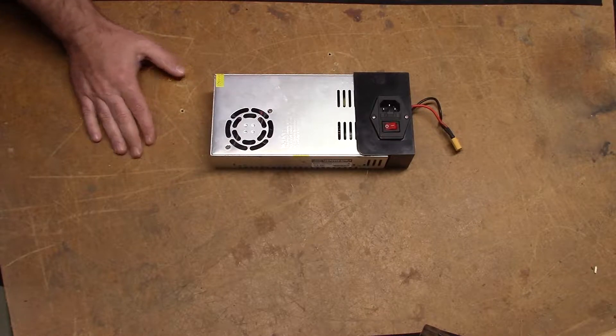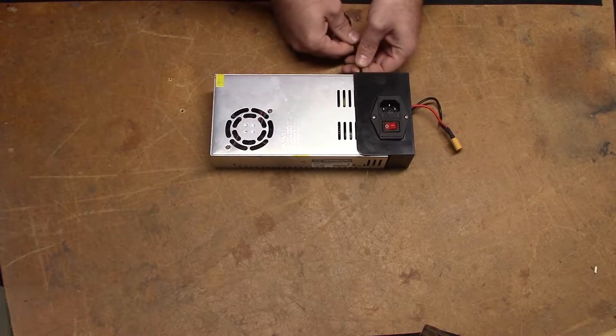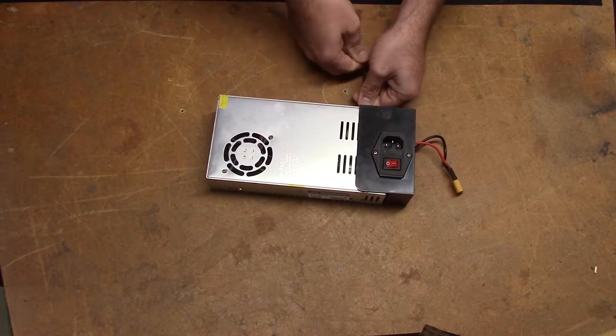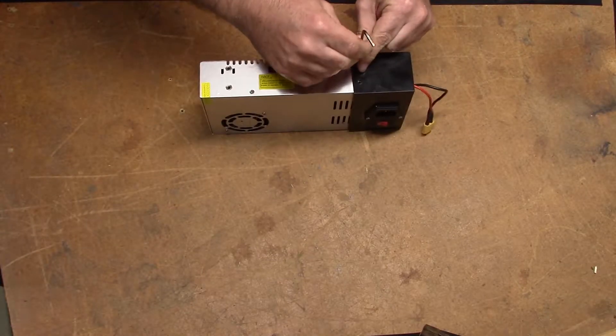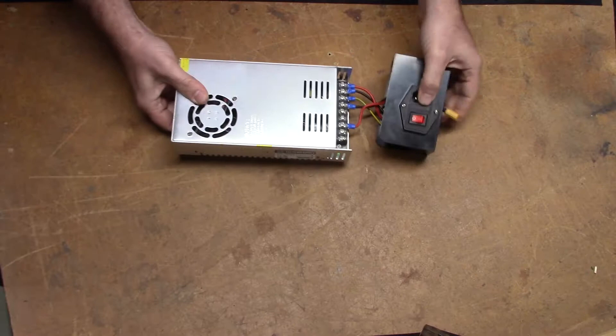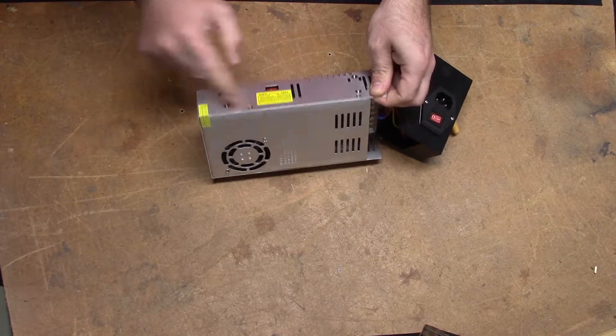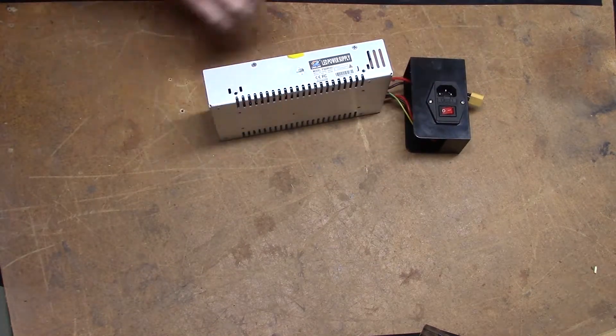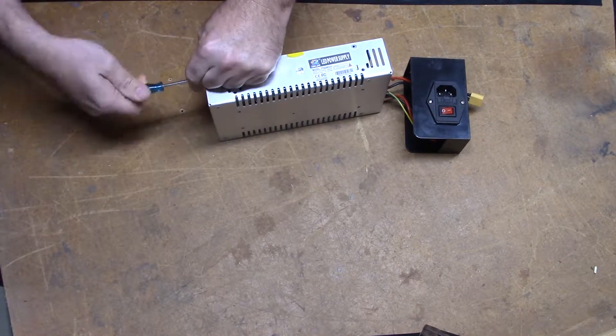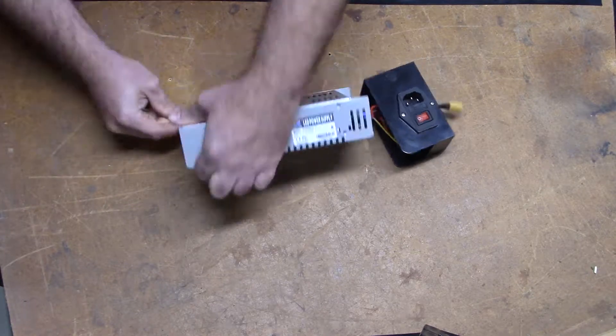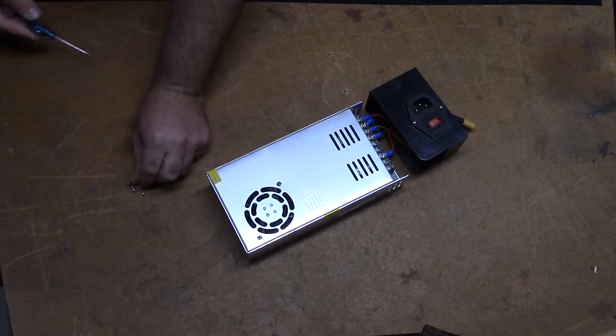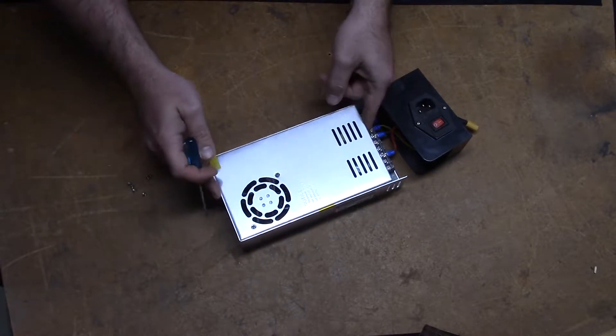We start with taking off the cover that covers up the mains, and then there are two screws on either side that need to come off. You'll have to cut this sticker with a razor blade and then this should just lift right out.